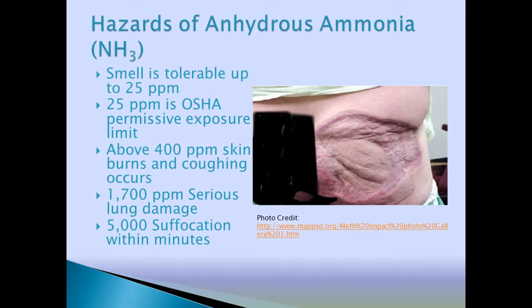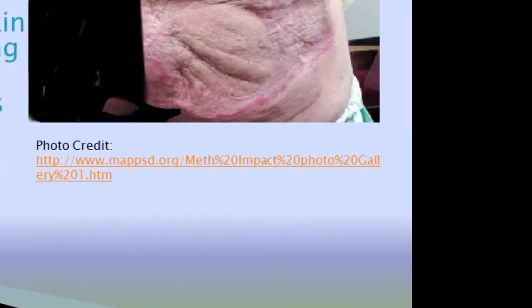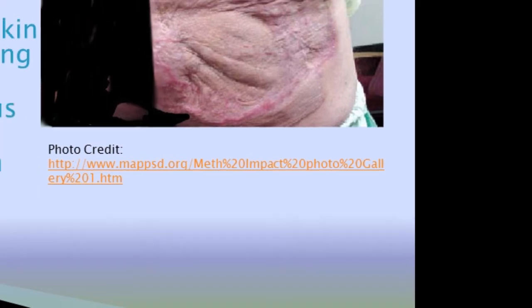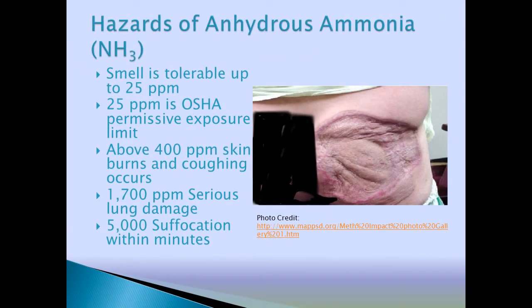You'll get used to the new GHS labelings as you see more of them. At the bottom of the picture there's a photo credit for where the picture is coming from. This is the damage that anhydrous ammonia can have on skin contact. Some of the hazards: the smell up to 25 parts per million is intolerable. 25 ppm is OSHA's Permissible Exposure Limit (PEL) for anhydrous ammonia. Above 400 ppm, the skin burns, your lungs are burning, you're coughing.